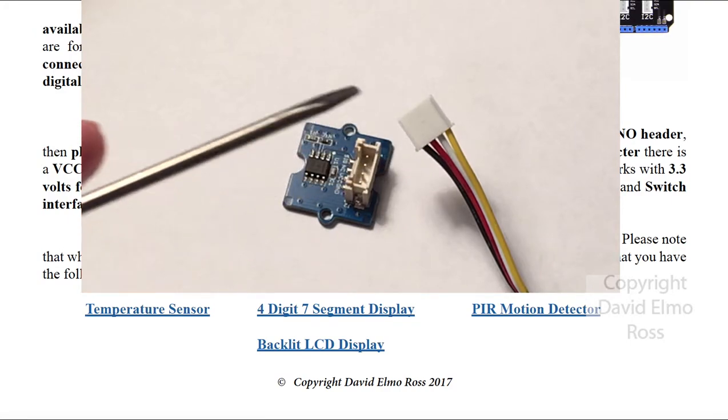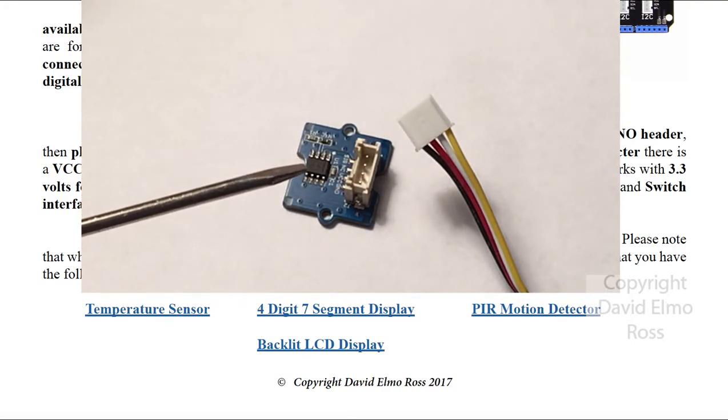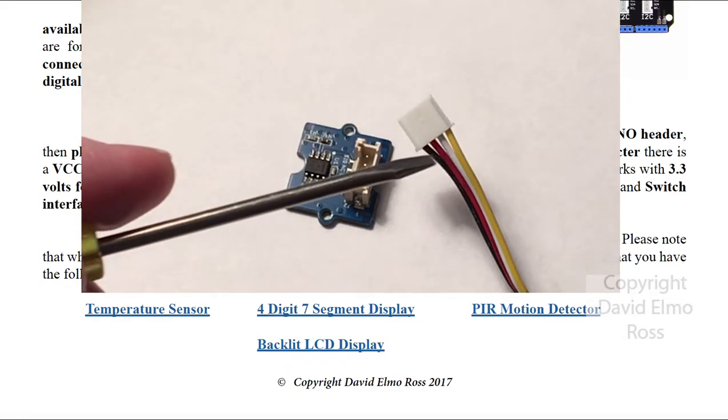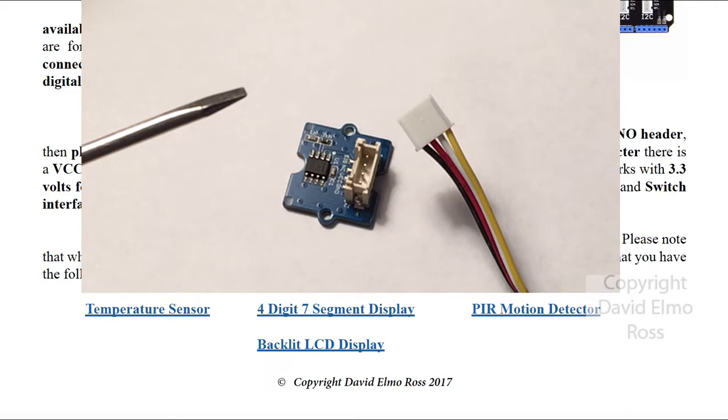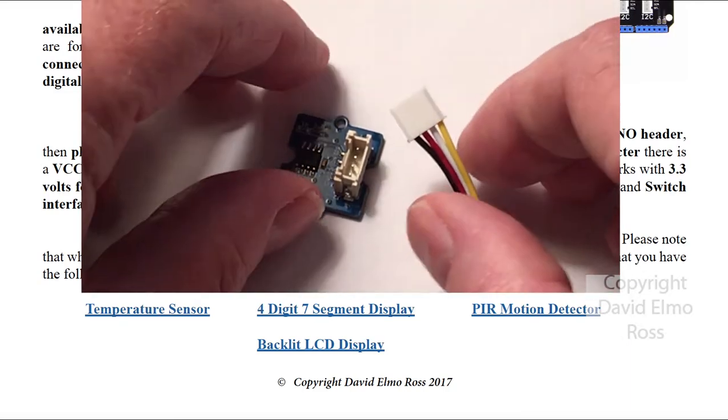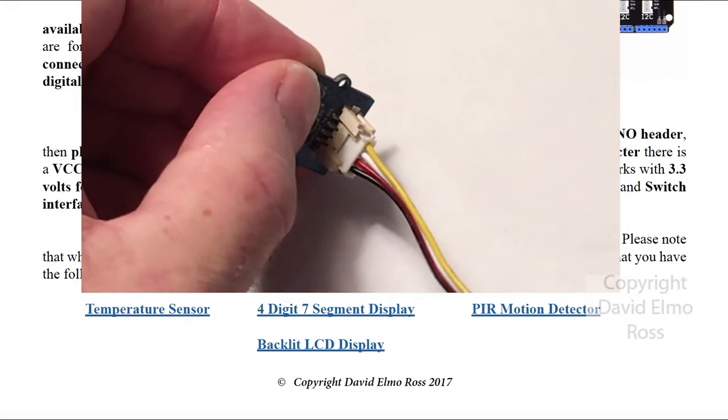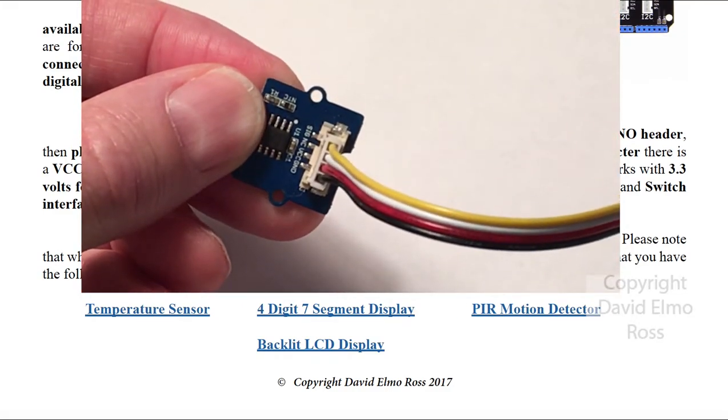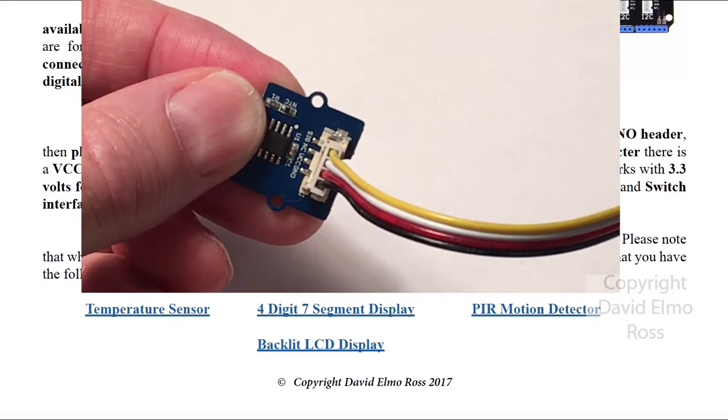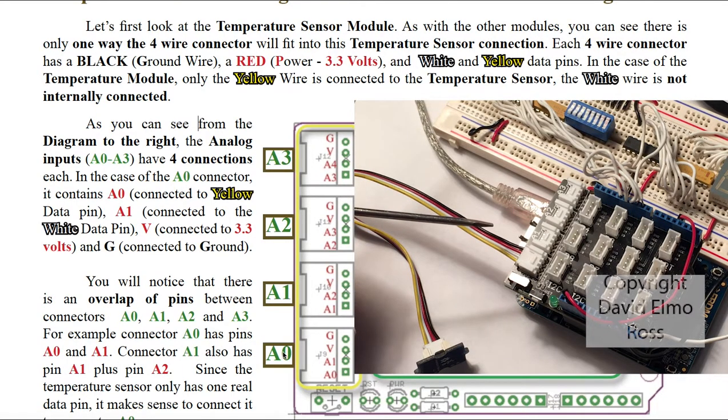Now of these two, only one of them is going to carry data because usually you either get a temperature sensor or a temperature/humidity sensor. In this case, since we don't have the humidity sensor, only one of these two wires is going to actually carry data. Now there's only one way to connect these, so it's pretty foolproof. Once it's connected, the next thing to do is connect it to the Grove shield.